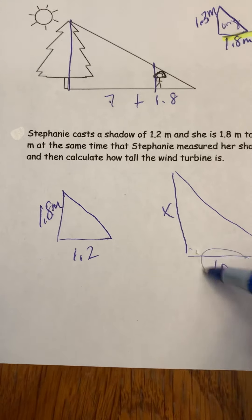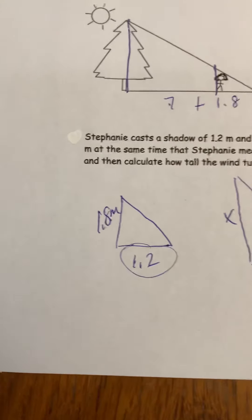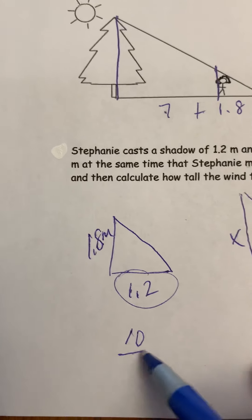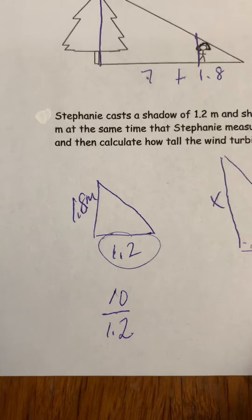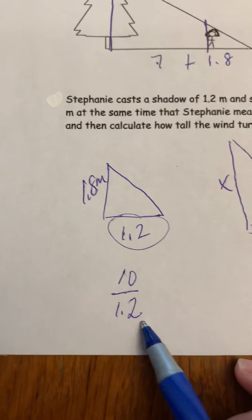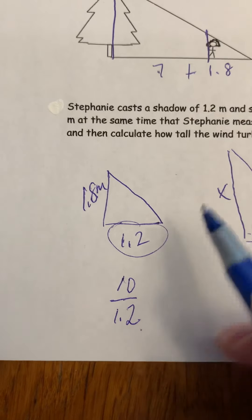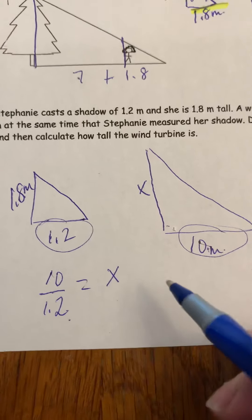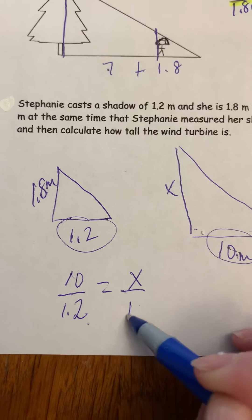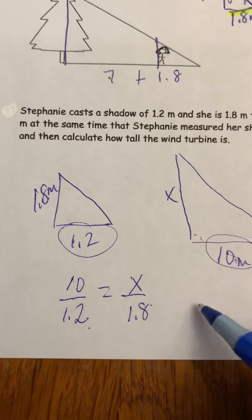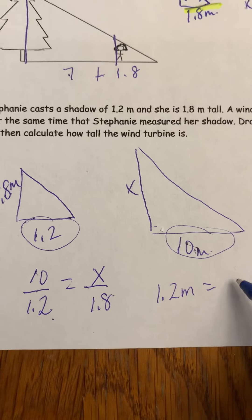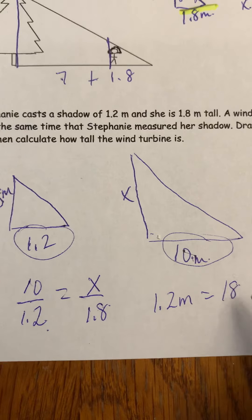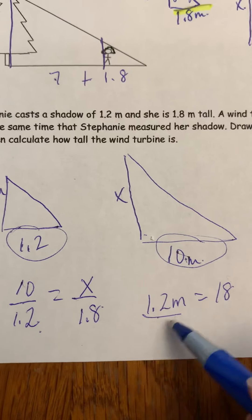So I'm going to set it up like this: 10 meters is the shadow of the wind turbine when one and two tenths of a meter is the shadow of Stephanie. We don't know how tall the wind turbine is, but we know that Stephanie is one and eight tenths of a meter tall.